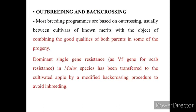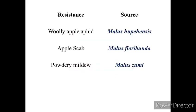Outbreeding and Backcrossing: Most breeding programs are based on outcrossing, usually between cultivars of known merits with the objective of combining the good qualities of both parents in some of the progeny. Dominant single-gene resistance in Malus species has been transferred to the cultivated apple by a modified backcrossing procedure to avoid inbreeding. Various Malus species are resistant to specific pests: Malus hopeiensis is resistant to woolly apple aphid, Malus floribunda is resistant to apple scab, and Malus zumi is resistant to powdery mildew.